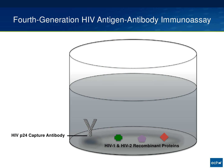Specifically, this test has an HIV P24 capture antibody to capture circulating P24 antigen in the patient sample, and it also has HIV-1 and HIV-2 recombinant proteins. The capture antibody is only capturing HIV-1 P24 antigen, while the recombinant proteins are capturing HIV-1 or HIV-2. The rapid test's fourth generation has specific antigen recombinant proteins that can differentiate whether it's HIV-1 or HIV-2.